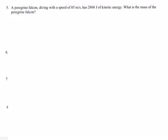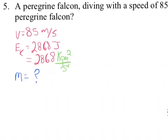This is question number five. A peregrine falcon dives at a speed of 85 meters per second and has 2,868 joules of kinetic energy. What is the mass of the peregrine falcon? I will use the triangle technique and also solve algebraically. The knowns are 85 meters per second and 2,868 joules — broken down into kilogram meters squared per second squared — and what we're trying to solve for is the mass.